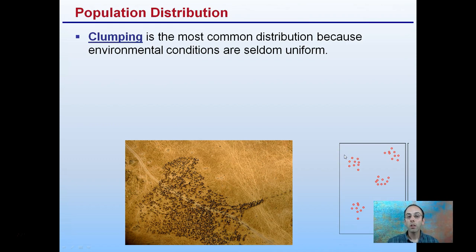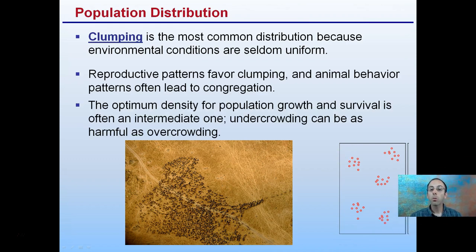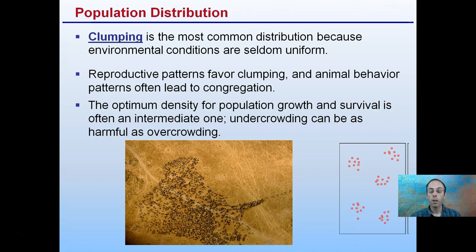Another population distribution is called clumping. This is the most common distribution because environmental conditions are seldom uniform. Reproductive patterns favor clumping, and animal behavior patterns often lead to congregation. We can see little clumps of these particular organisms. The optimum density for population growth and survival is often an intermediate one — undercrowding can be as harmful as overcrowding. We often think of the negatives of too many organisms in one area, but in certain cases, too few individuals in an area can also be harmful.